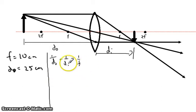Okay, so we're going to rearrange this a little bit so we can have 1 over DI isolated. 1 over DI equals 1 over F minus 1 over DO. Plug in some numbers for F and DO. We have 1 over 10 minus 1 over 25.